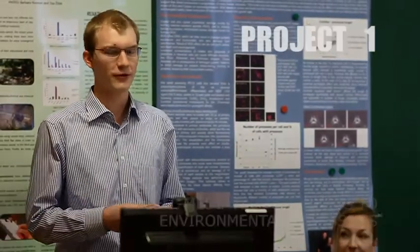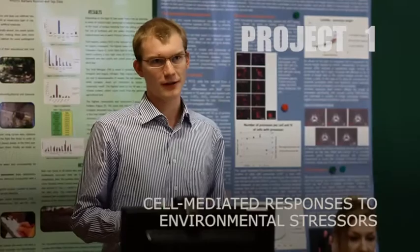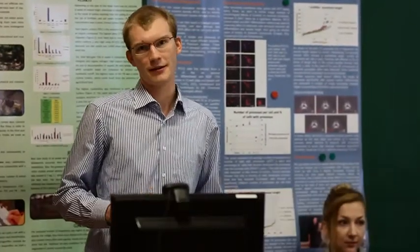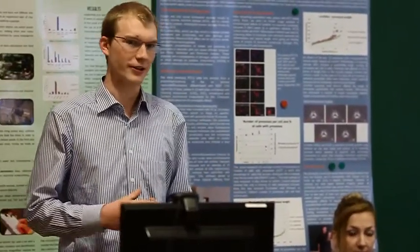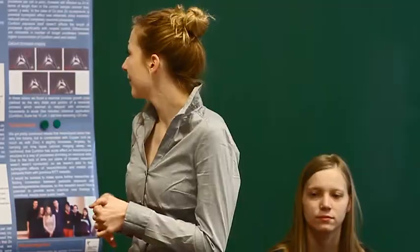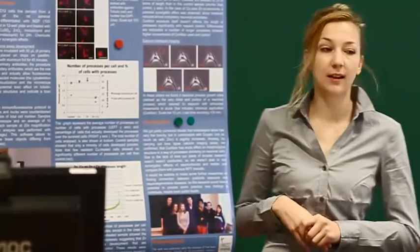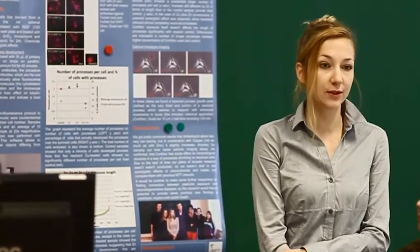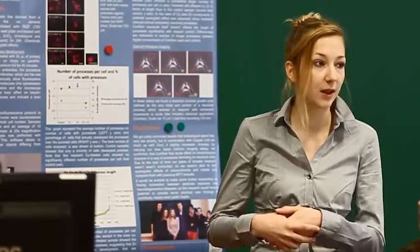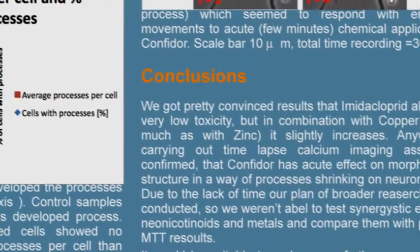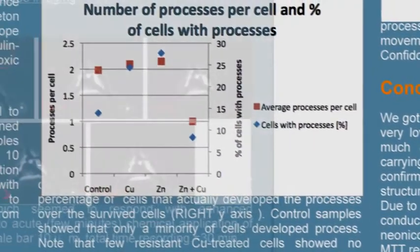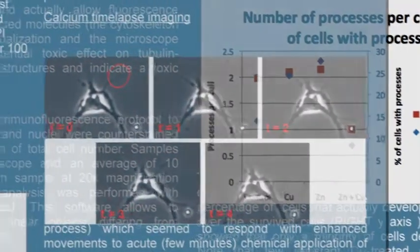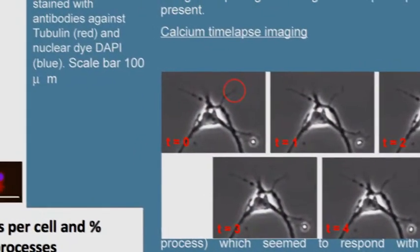The normal function of neuronal cells, but nicotine here replaces this neuronal transmitter. The first graph represents the number of cells — the percentage of cells that actually develop the processes — and the average number of processes developed per cell. It is seen that the coverage of the cells is much bigger.